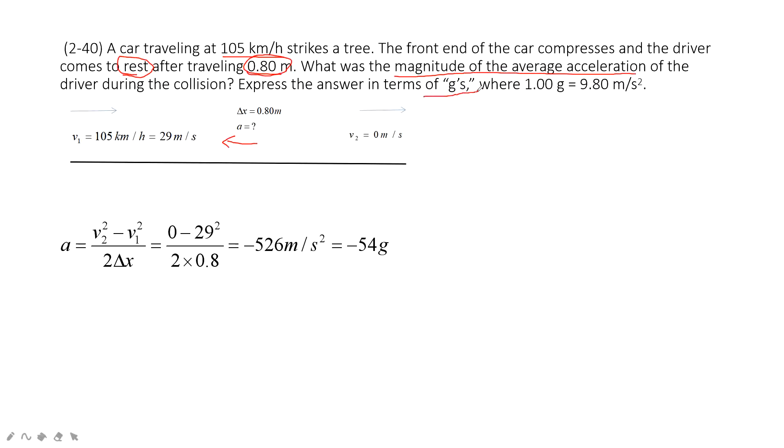And there it wants us to express answer in terms of g. So 1g is 9.8 m per second squared. So we can use this number 526 divided by 9.8. And again it is 54g. Thank you.